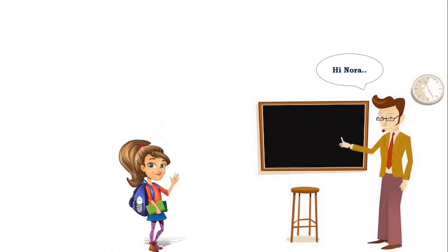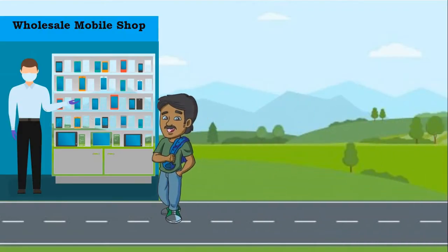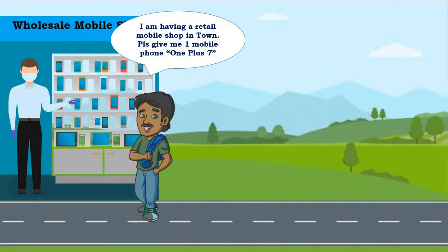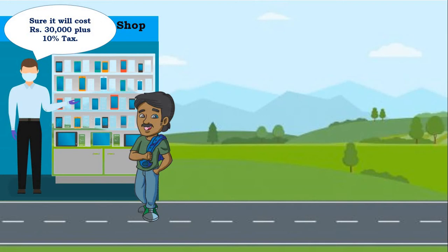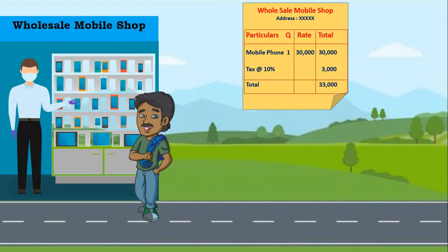Hi sir. To understand ITC and VAT, let's first watch this animation clip. A retailer goes to a wholesaler and says he wants a OnePlus 7 mobile phone. The wholesaler says the price is 30,000 plus 10% tax. The retailer agrees, and the invoice shows 30,000 price plus 3,000 tax at 10% rate. The retailer pays 33,000 and takes the mobile.